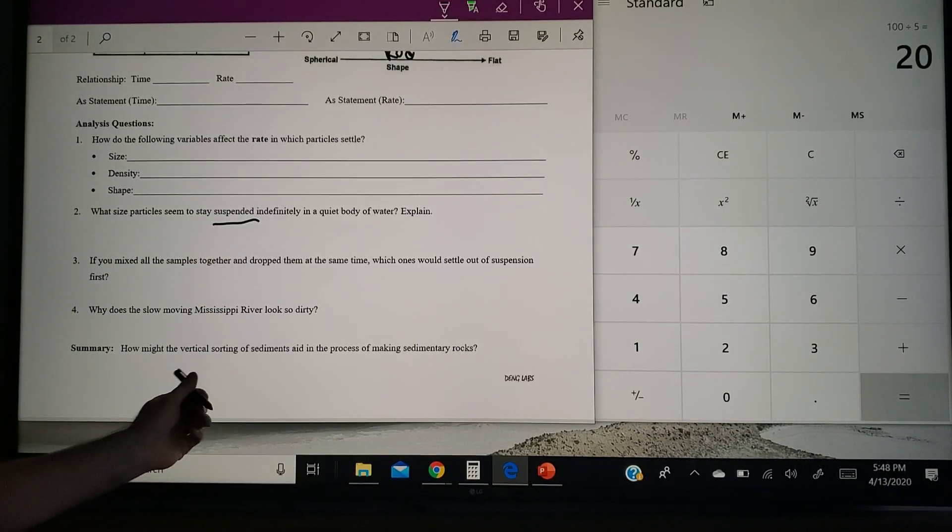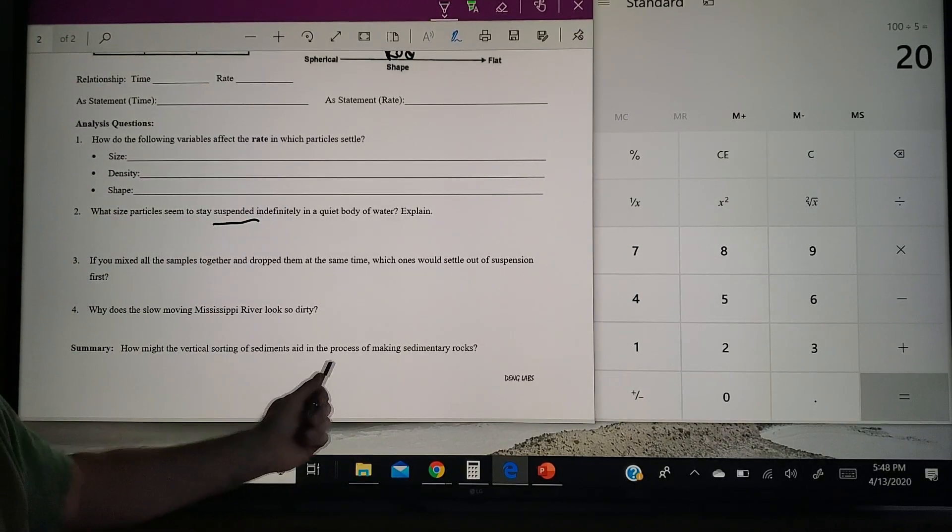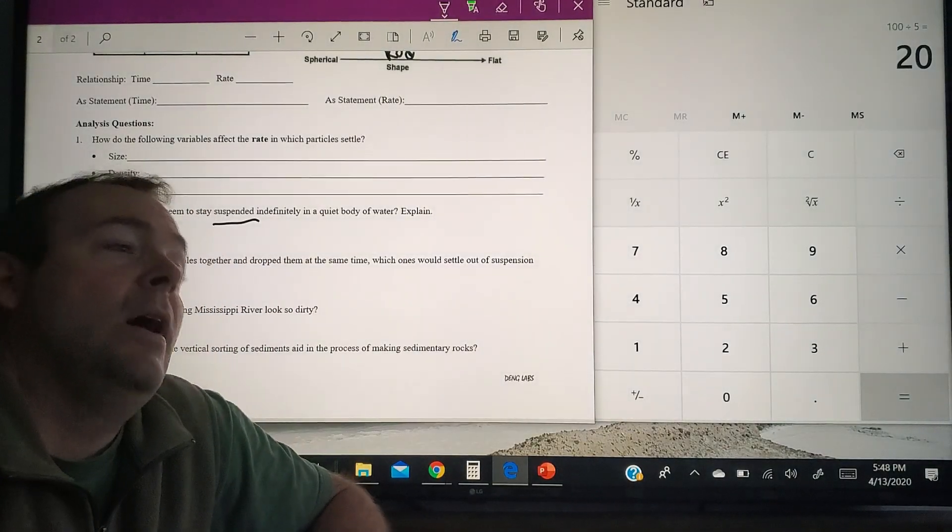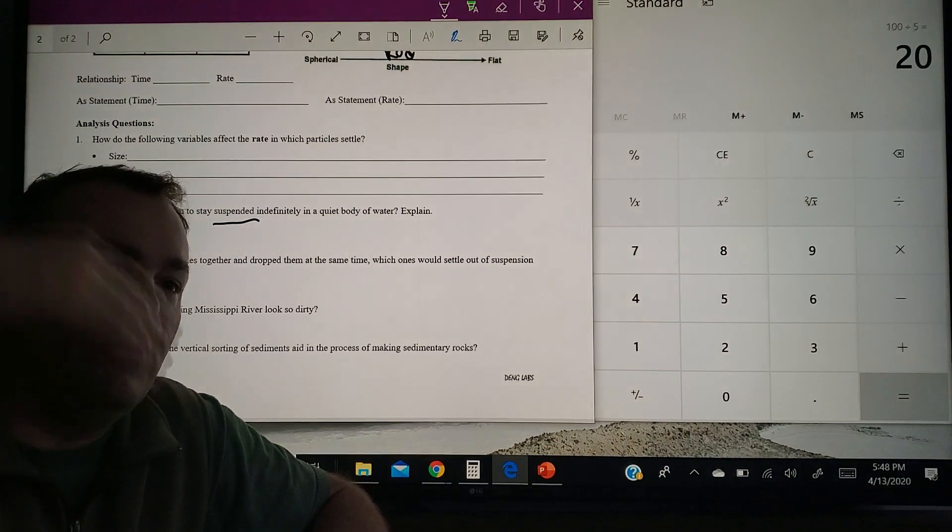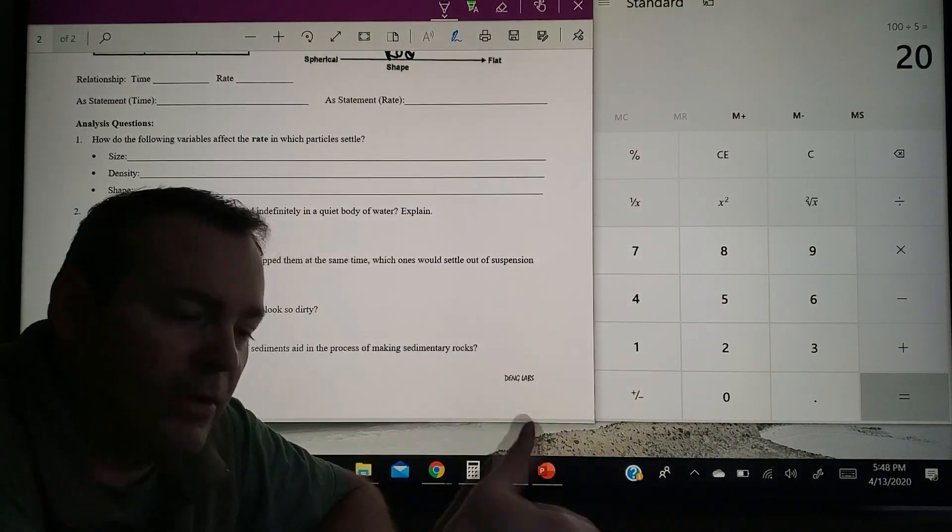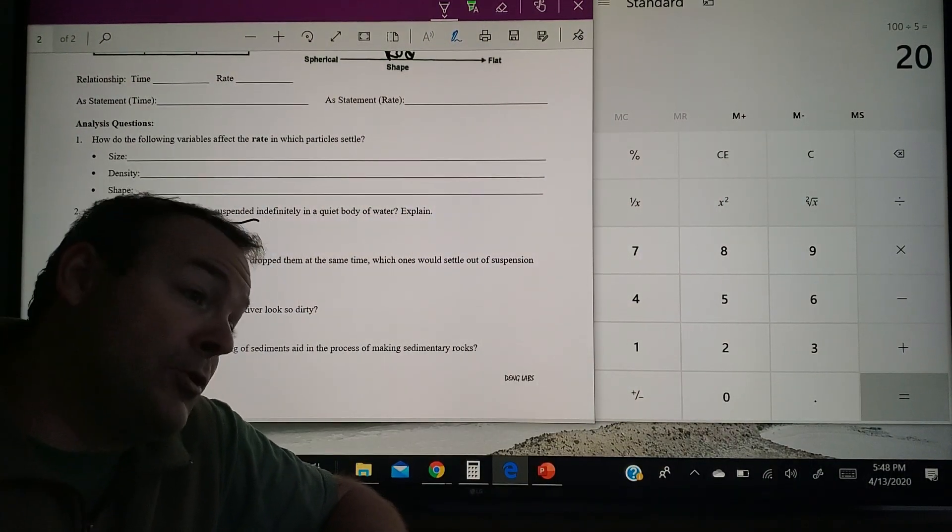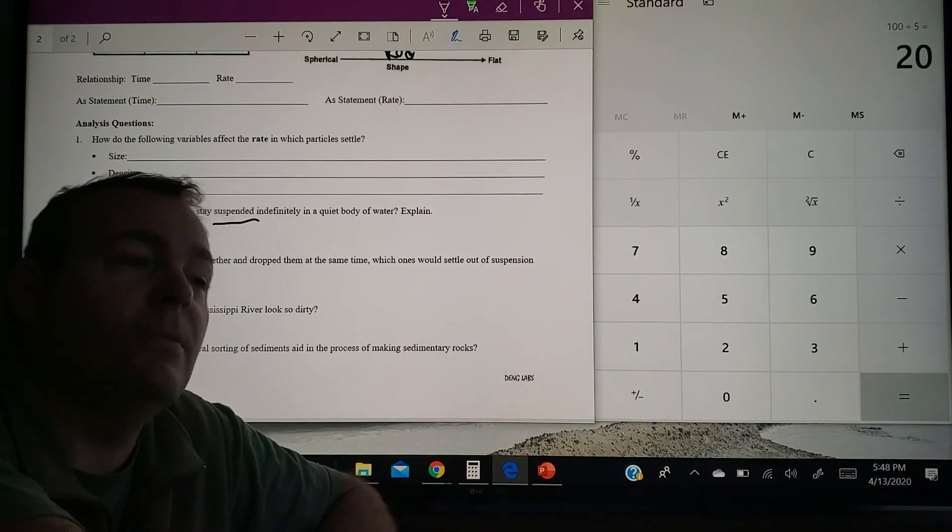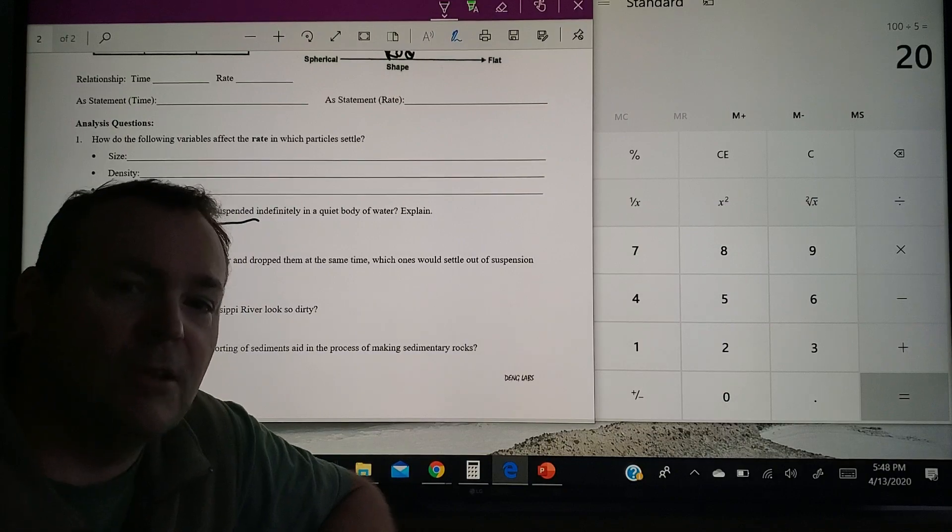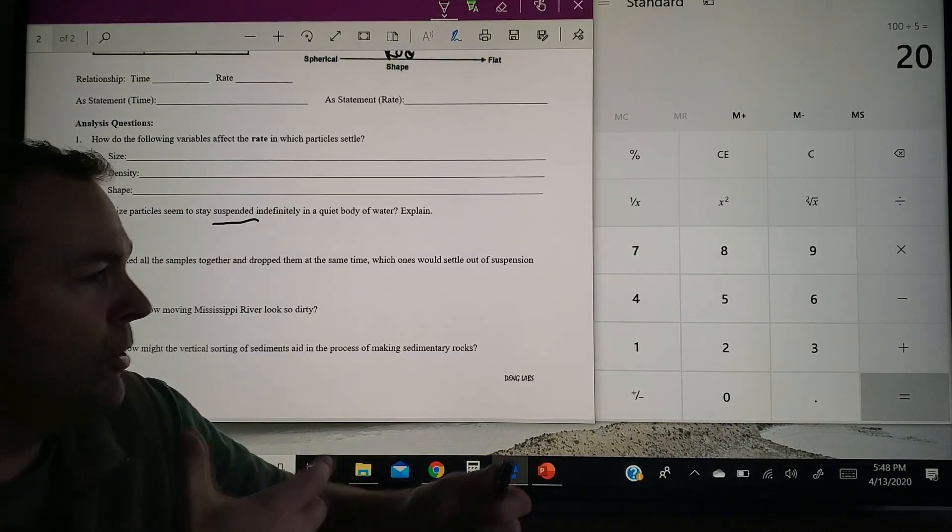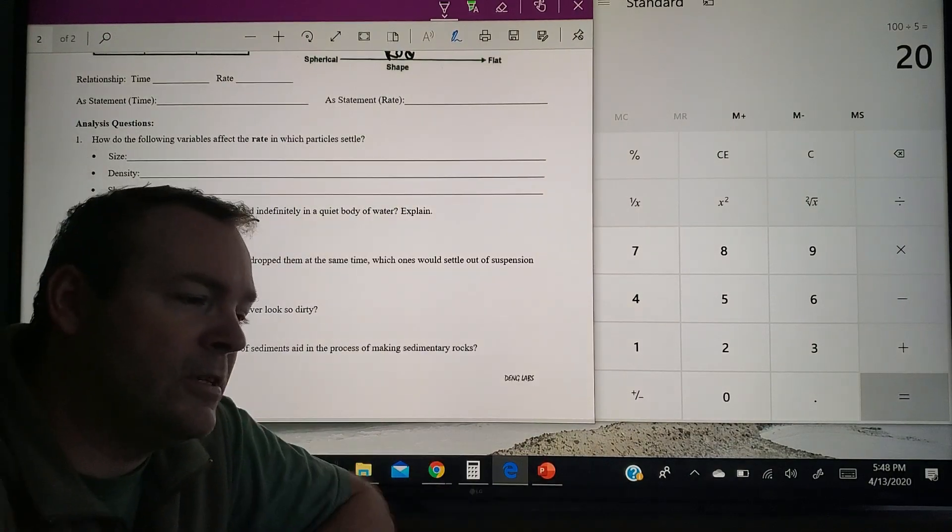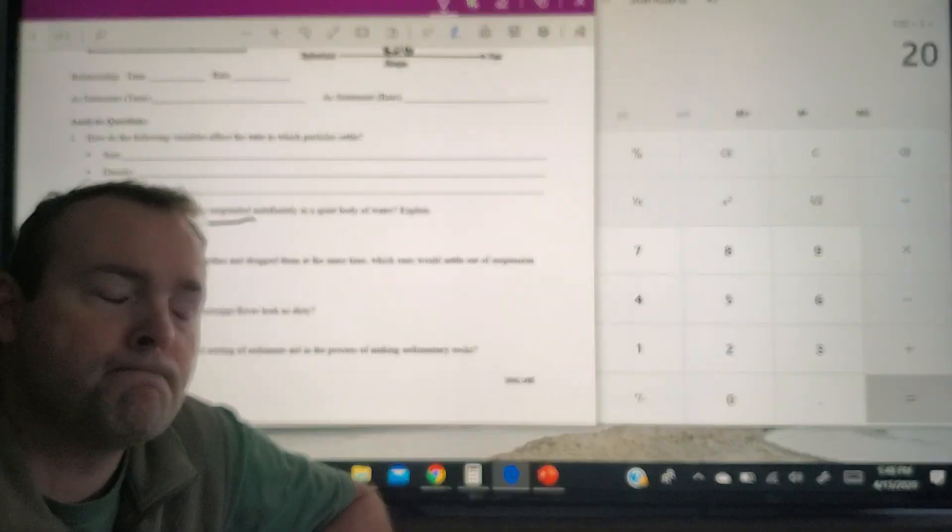And the last one there, how might the vertical sorting of sediments aid in the process of making sedimentary rocks? Well, if you sort things out either vertically or horizontally, you have now different particle sizes in different places, which means you're going to make different rocks. All sand in one place, you make sandstone. All silt size in another place, you make silt stone. So this sorting business that mother nature does for us helps make different types of sedimentary rocks as well. All right.